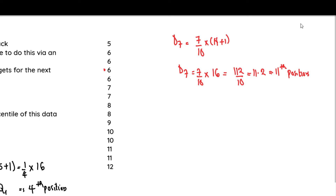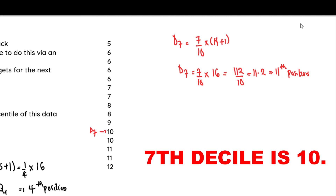Counting to the 11th position in our data set: one, two, three, four, five, six, seven, eight, nine, ten, eleven — that value is 10. So our seventh decile D7 equals 10. This implies that if we divide our distribution into 10 equal parts, the seventh decile is at 10.